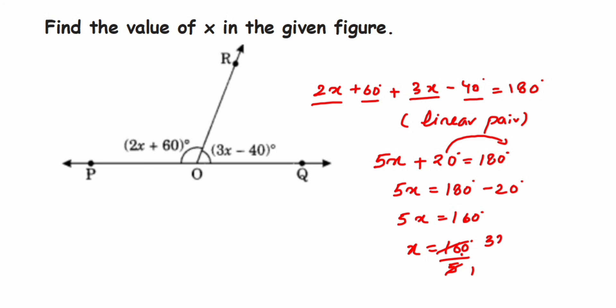Therefore, the x value will be equal to 32 degrees. That's it. This was a simple question we have just applied one property of the linear pair and that's it.